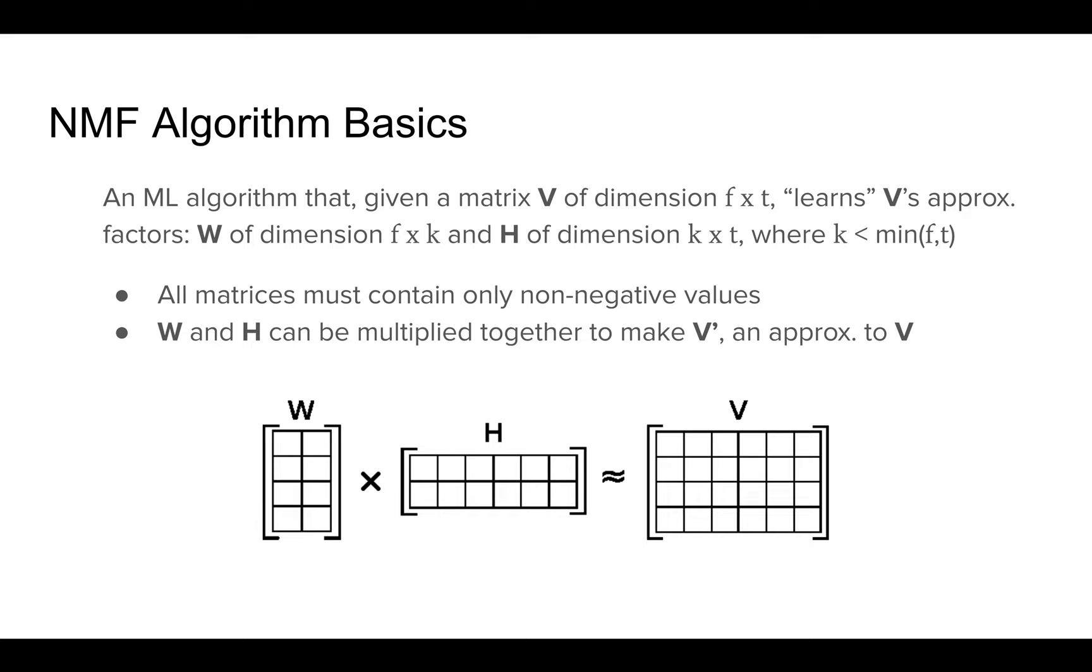So here are the basics of the NMF algorithm. It is given a matrix V as its input of dimension F by T. And what it does is it learns these approximate factors, W of dimension F by K and H of dimension K by T, where there's a constraint on K, where it needs to be less than the minimum dimension, either F or T, for usability reasons.